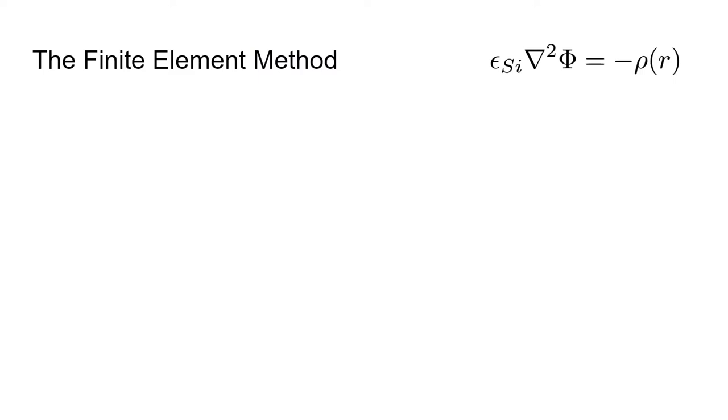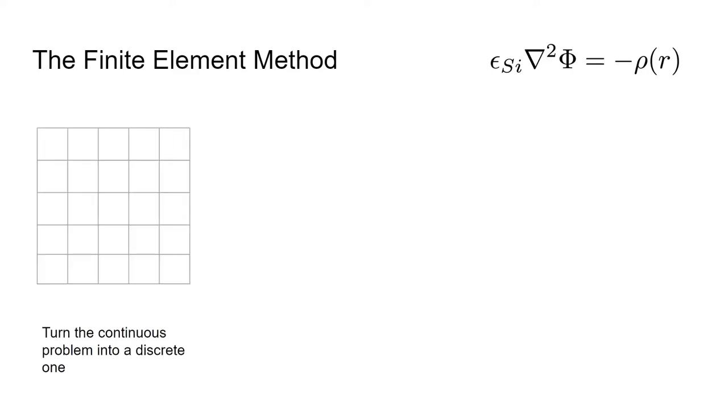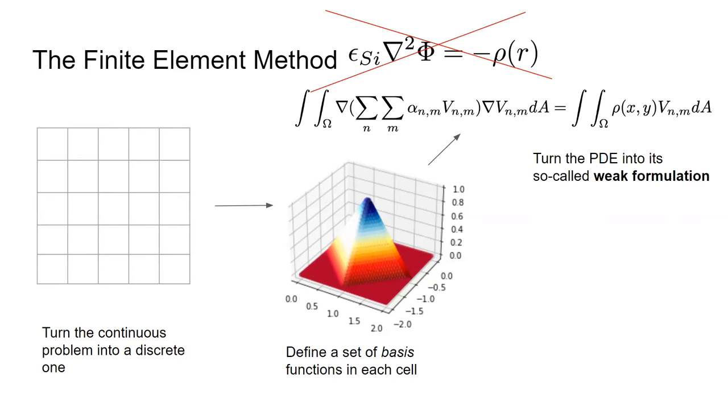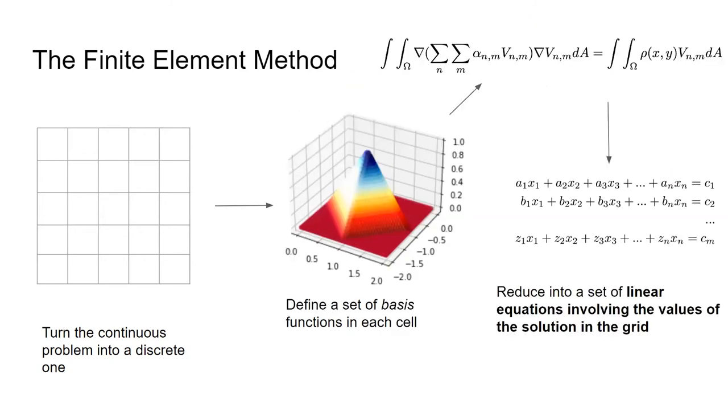The finite element method applies to any partial differential equation. It's a numerical algorithm. Like any other numerical algorithm, it takes the continuous problem and turns it into a discrete one. In each of the cells in this discrete grid, we want to define a set of basis functions that add to one that allow us to approximate the solution to our PDE as a weighted sum of those basis functions. Then we rewrite our PDE into its weak formulation with some algebra and integration by parts. The point of that is basically to turn it into a set of linear equations.